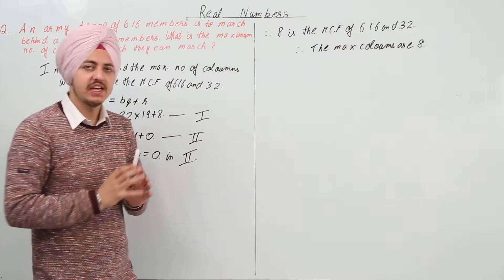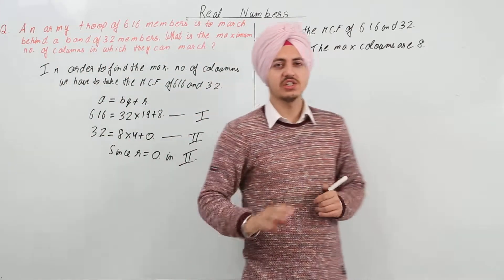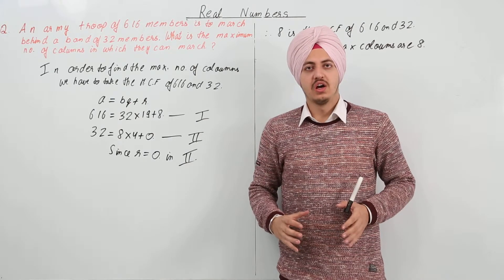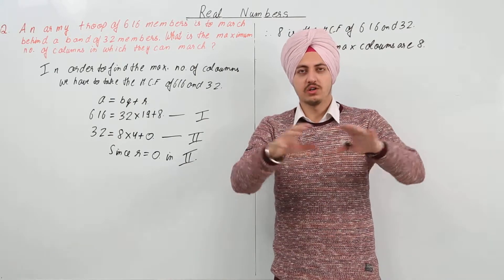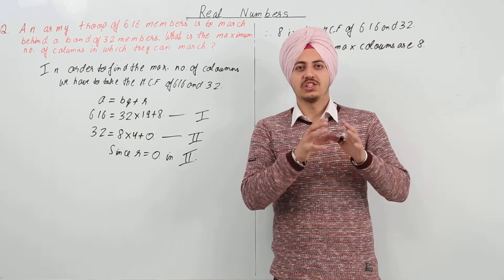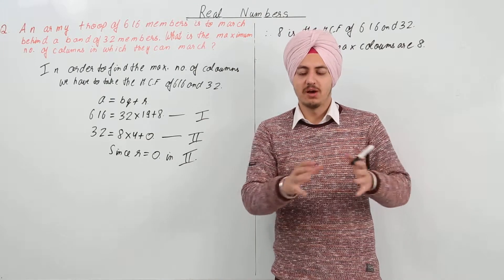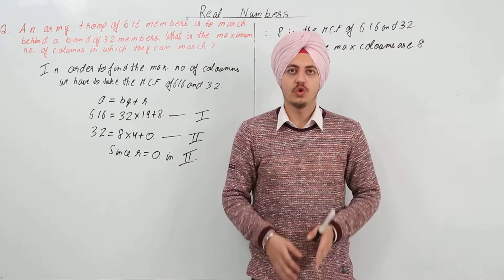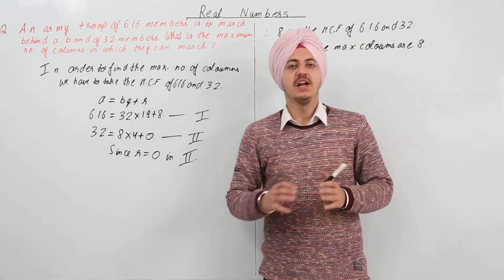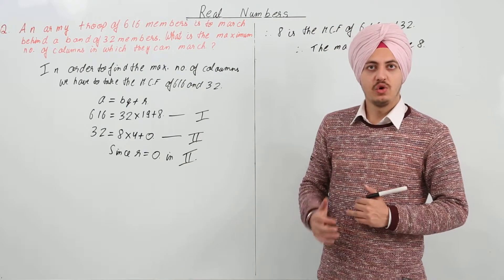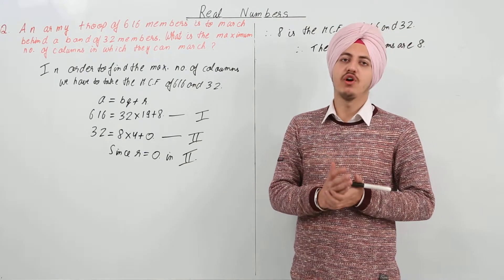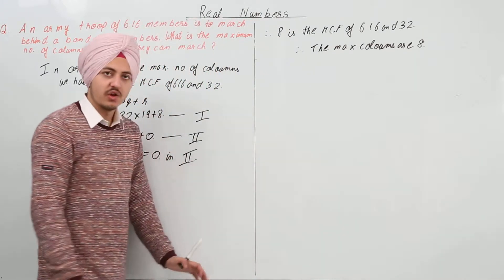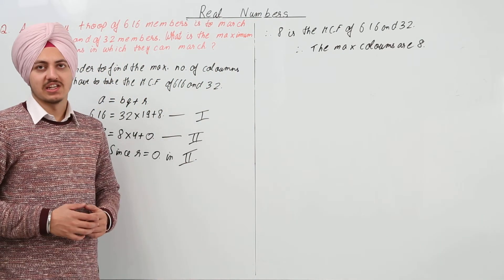So any type of questions like this, in which we have two different troops or two different stacks given or two different numbers of things given, and we have to arrange them in a similar way so that no number is left behind, it can be 2, it can be 3. So we have to find out the HCF for that. We find out the HCF using Euclid's division algorithm, and the HCF is 8 in this case.